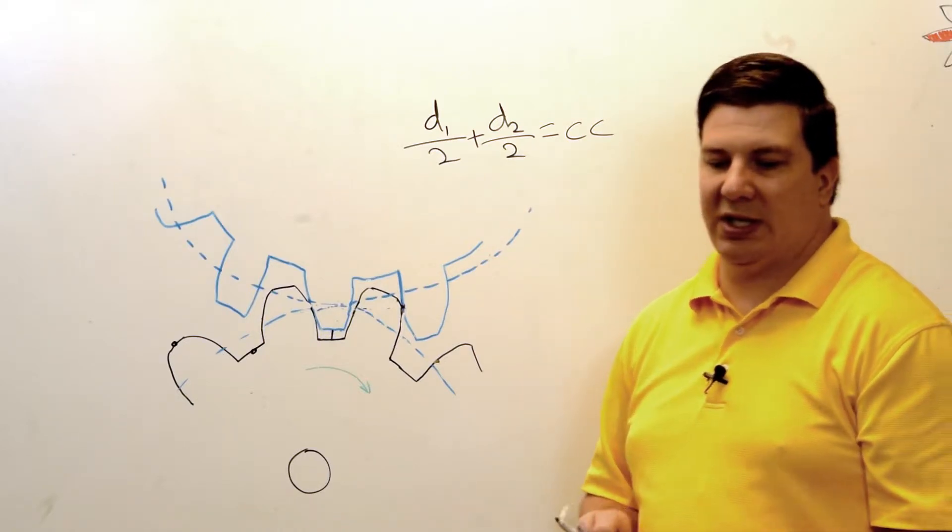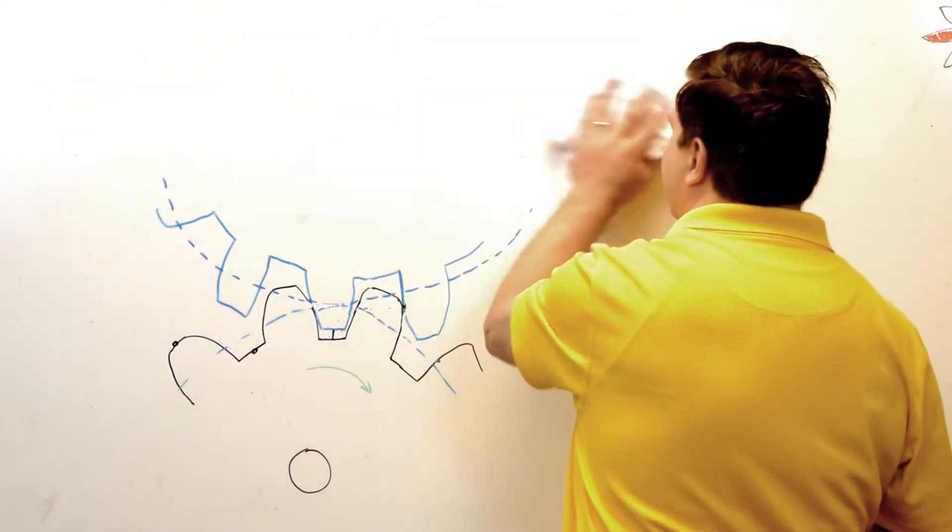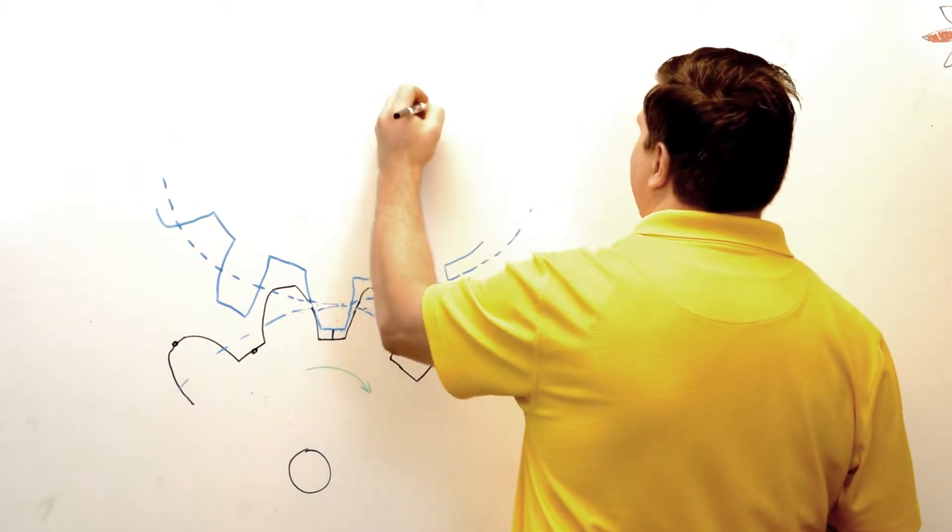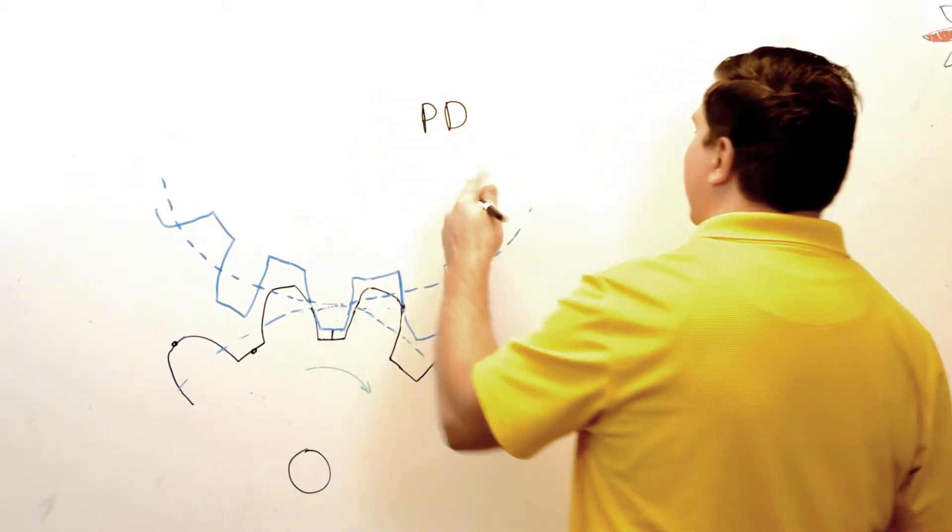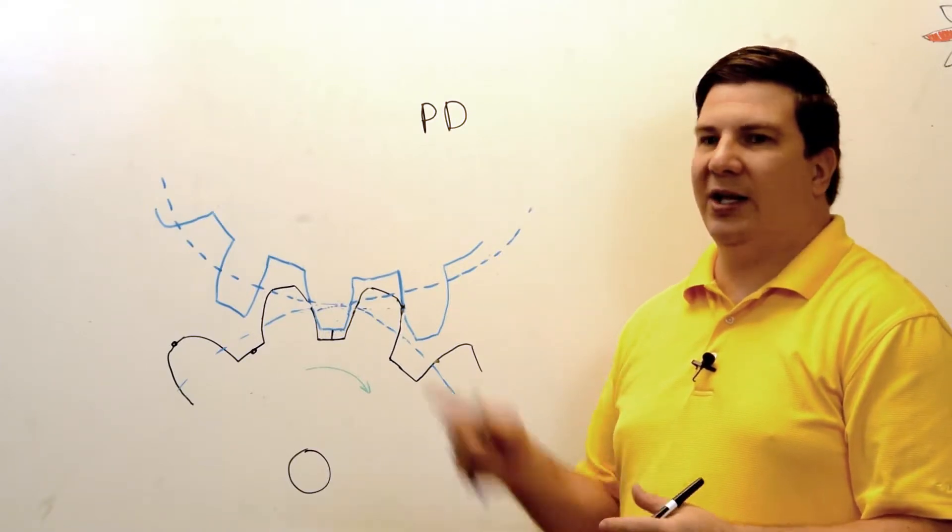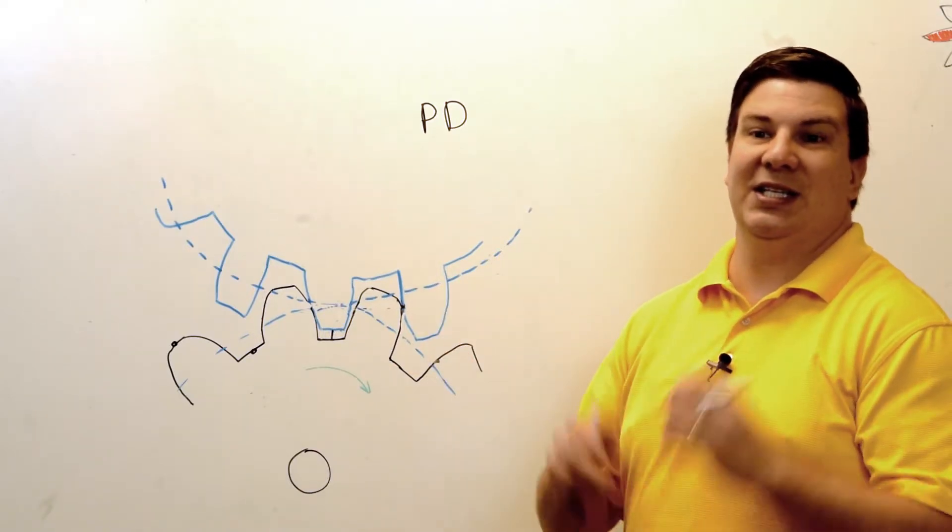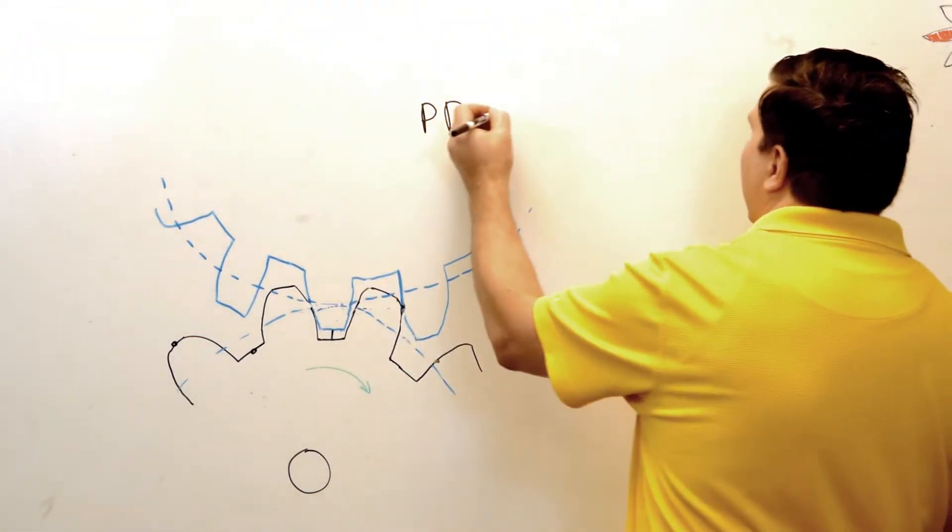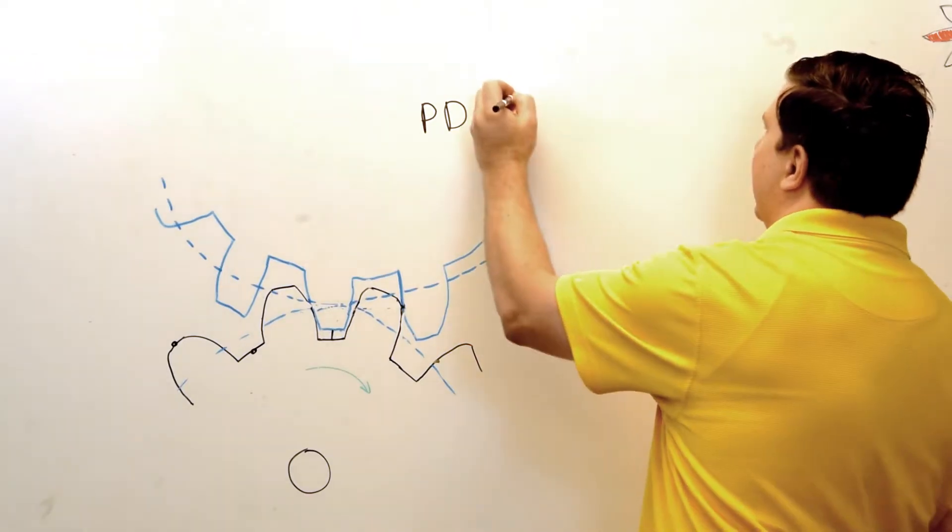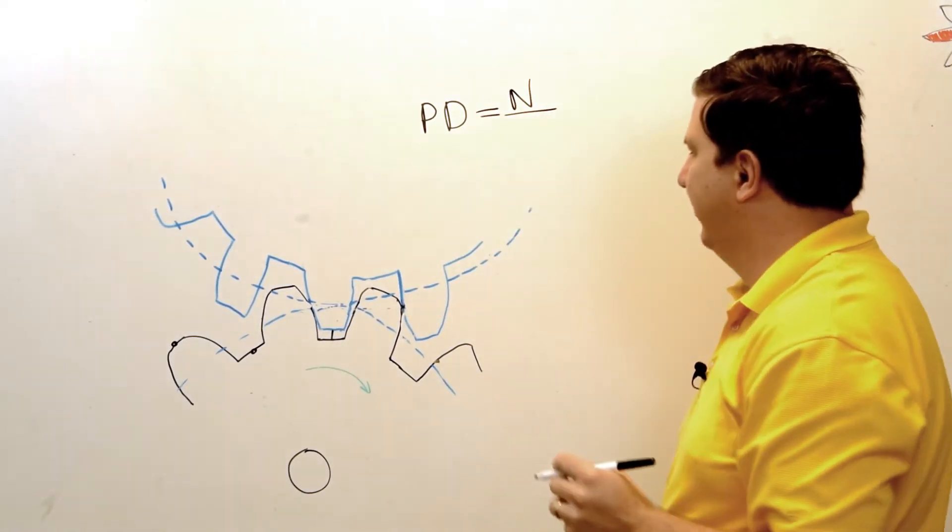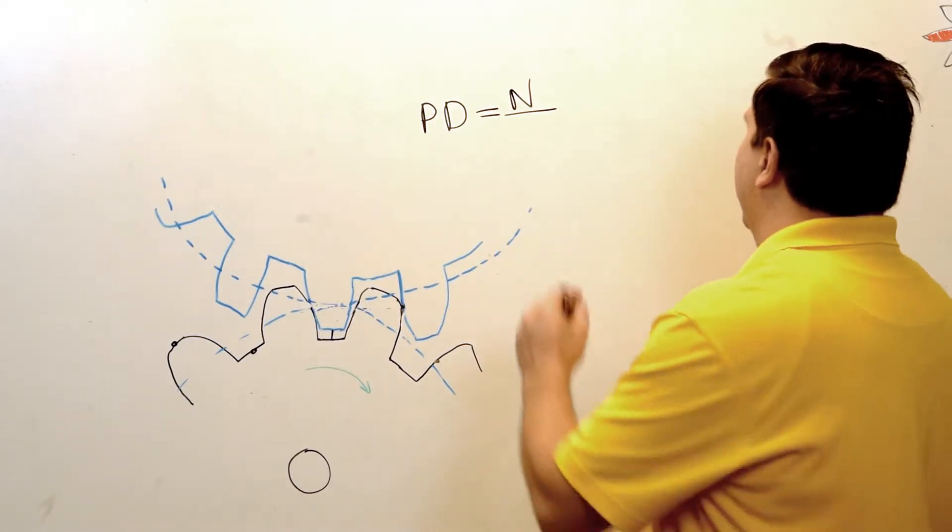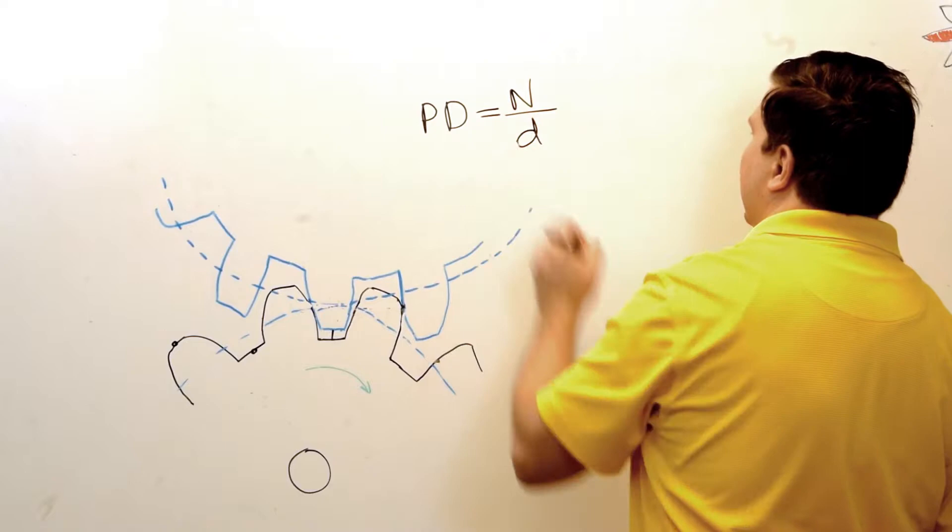The second thing that we're going to need to talk about is diametrical pitch. And this is represented by the letters PD, both capitalized. Sometimes you'll just see the letter P for the pitch diameter. I like to use both just to indicate that's exactly what I'm talking about. And that is the number of teeth, and that is divided by the pitch circle of the tooth. And that's represented by lowercase D.